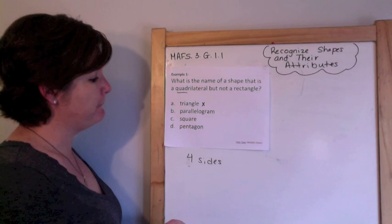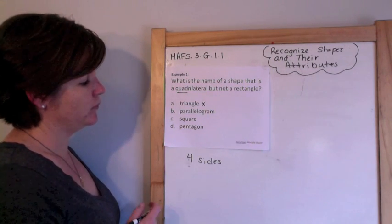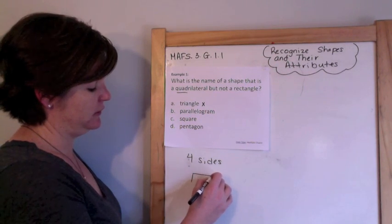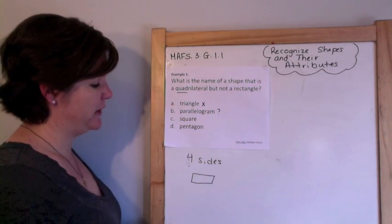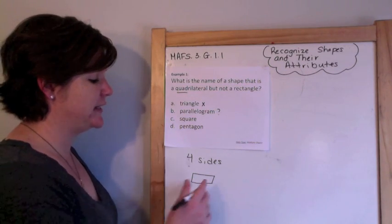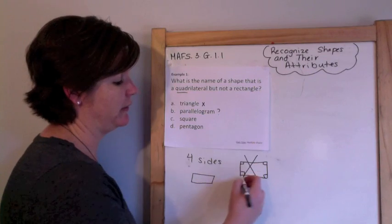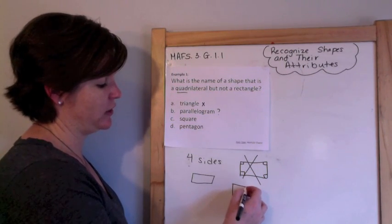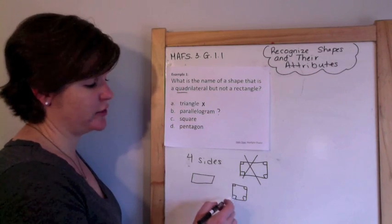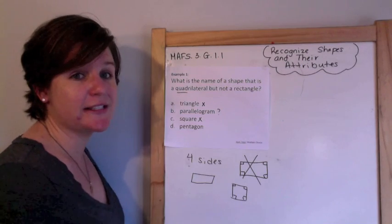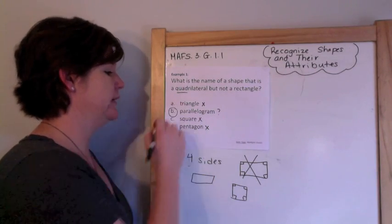A parallelogram could technically be a rectangle, but it's usually a little bit more slanty. Parallelograms means that it has two sets of parallel sides, but it does not necessarily have to have the right angles that a rectangle has. A square has all equal sides and all right angles. So the fact that we have all right angles for a square and the opposite sides are all the same, a square is technically a rectangle. And a pentagon has five sides, so we can eliminate that one. B is our answer.